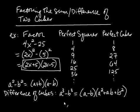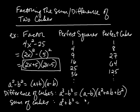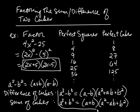Now there's also a formula for the sum of cubes. And that formula is: a cubed plus b cubed is equal to a plus b times a squared minus ab plus b squared. So these are the formulas that you want to have memorized.